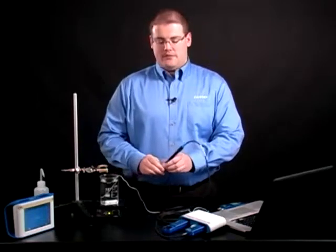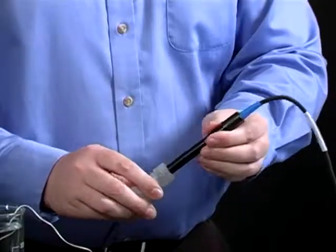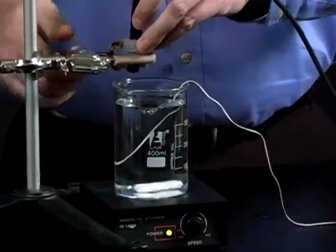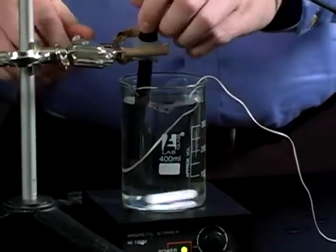We are now ready to begin collecting data. Remove the probe from the storage bottle and place it into your water sample, again making sure that it's submerged below the silver ring on the probe if it has one.